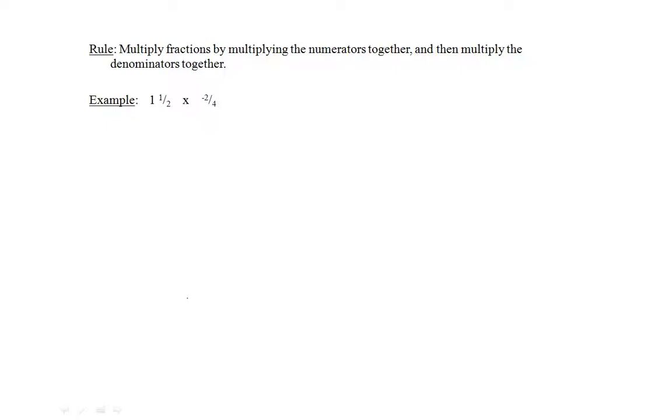The next rule is for multiplying fractions. Multiply fractions by multiplying the numerators together and then multiply the denominators together. Let's look at an example: 1 and 1 half times negative 2 over 4. Step one is to change a mixed number to an improper fraction.